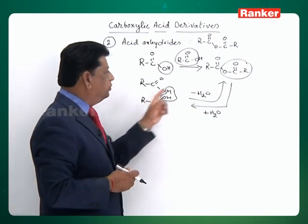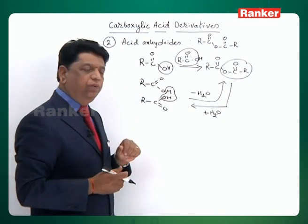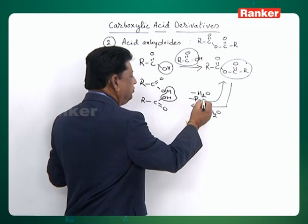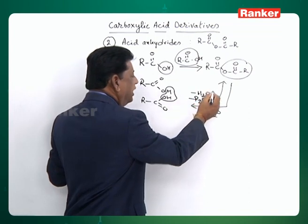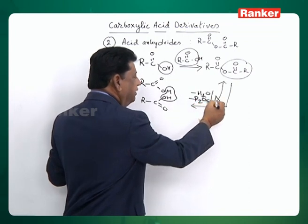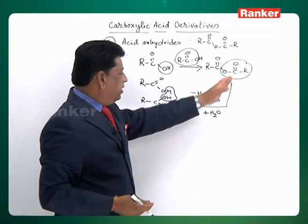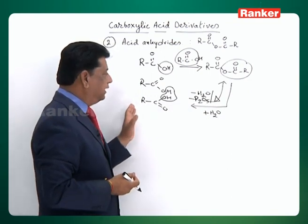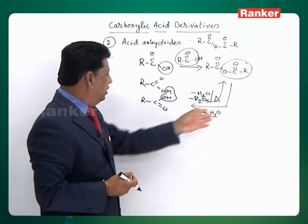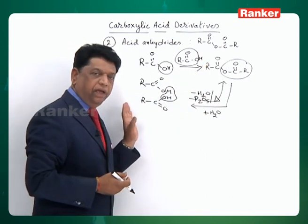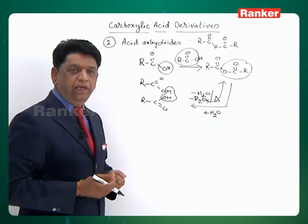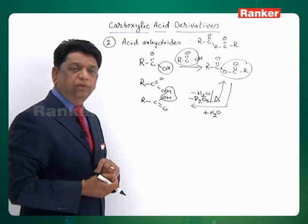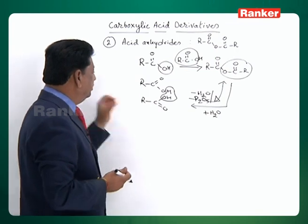Acids to anhydrides requires a catalyst like P2O5 and heating is necessary. But from anhydrides to acid, it is a spontaneous reaction — just add water and you will get the acid back. We will also get some heat because the reaction is exothermic.